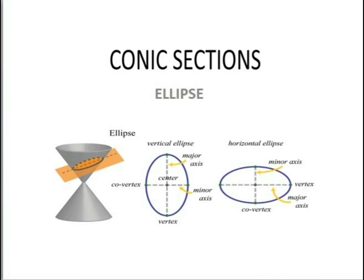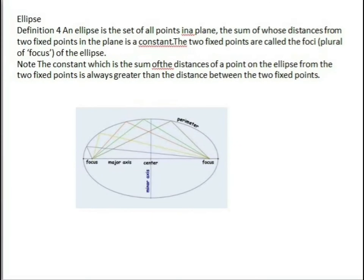Here we have horizontal ellipse and vertical ellipse. An ellipse is the set of all points in the plane the sum of whose distances from two fixed points f1 and f2 in the plane is a constant. So an ellipse is a set of all points in a plane the sum of whose distances from two fixed points in the plane is a constant.